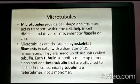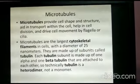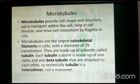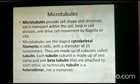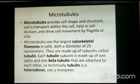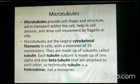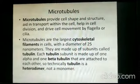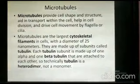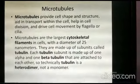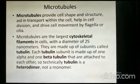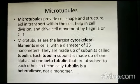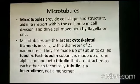Now we come to microtubules — the largest, thickest filament of the cytoskeleton. Microtubules provide cell shape and structure, aid in transport within the cell, help in cell division, and drive cell movement via flagella or cilia. They have a diameter of 25 nanometers and are made up of subunits called tubulin. Each tubulin subunit consists of one alpha and one beta tubulin, making tubulin technically a heterodimer, not a monomer.